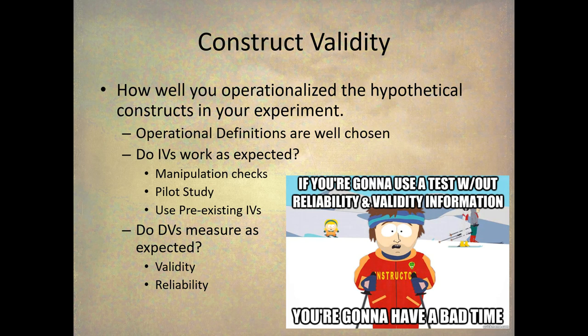In my experiments I manipulate the intention of someone to do somebody else harm, and I do that by describing different behaviors. One group gets a description of somebody acting very intentional, the other group gets a description of somebody acting negligent — that's my independent variable. Later in the experiment I ask them about that manipulation: did Bob act this way or that way? Hopefully subjects would remember how the person acted, and that would be a manipulation check.